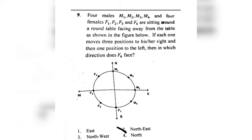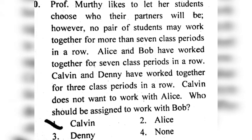The next question is about finding the direction, and the right option is north east, option number 2. This is question number 10 in Booklet A. They are asking about the pair of Bob, and the right option is Kelvin — Bob's pair will be with Kelvin, option A.